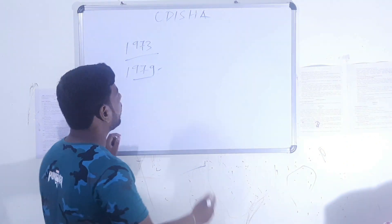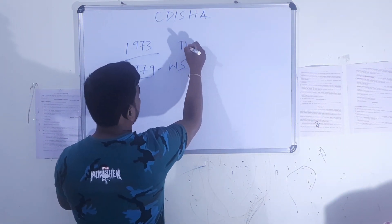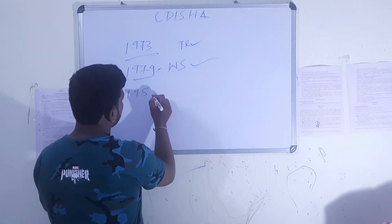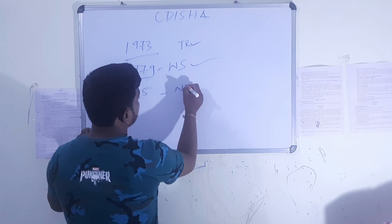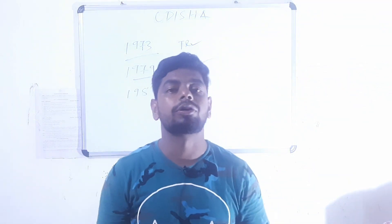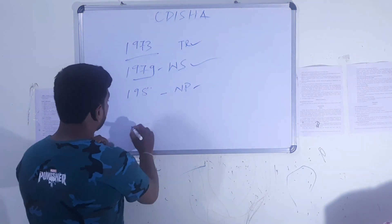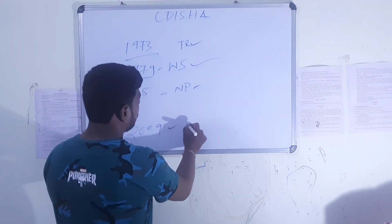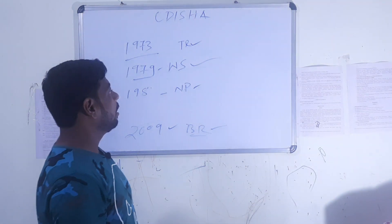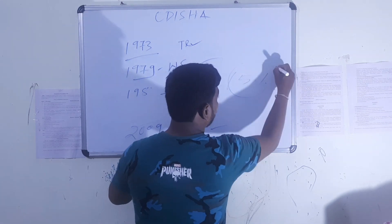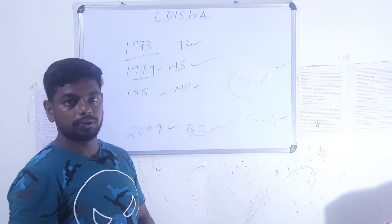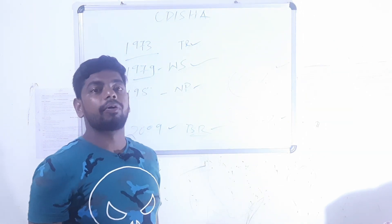In the year 1979, the Government of Odisha declared Similipal as a wildlife sanctuary. It is a tiger reserve and a wildlife sanctuary. It was later declared a national park by the Government of India around the 1980s. Further, it was declared a biosphere reserve by UNESCO in the year 2009. About 75% of Odisha's tigers are found in Similipal, and around 25% of the state's elephants are found here. Similipal is well known for its dense forest.